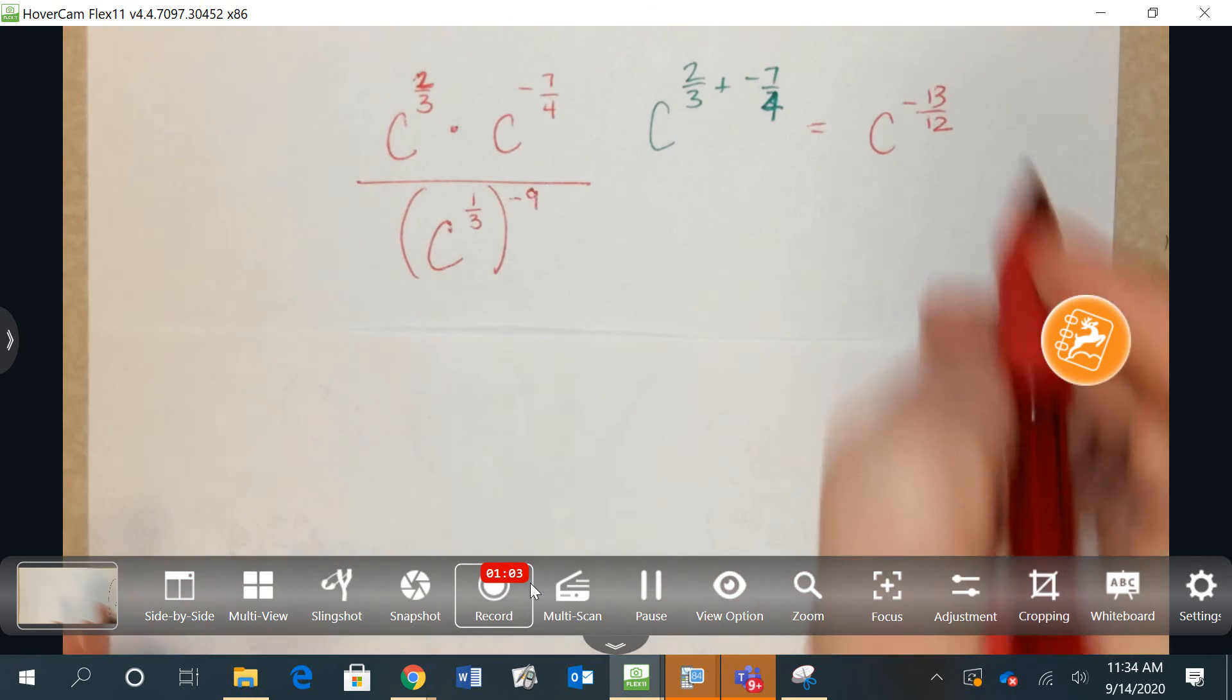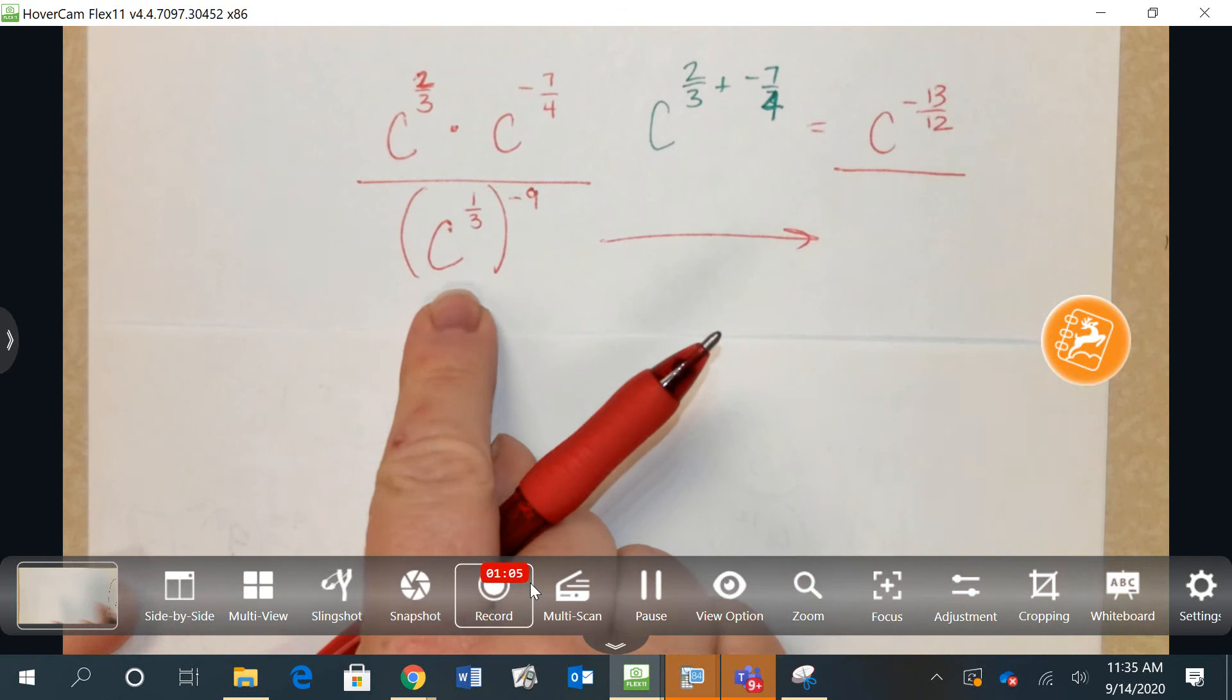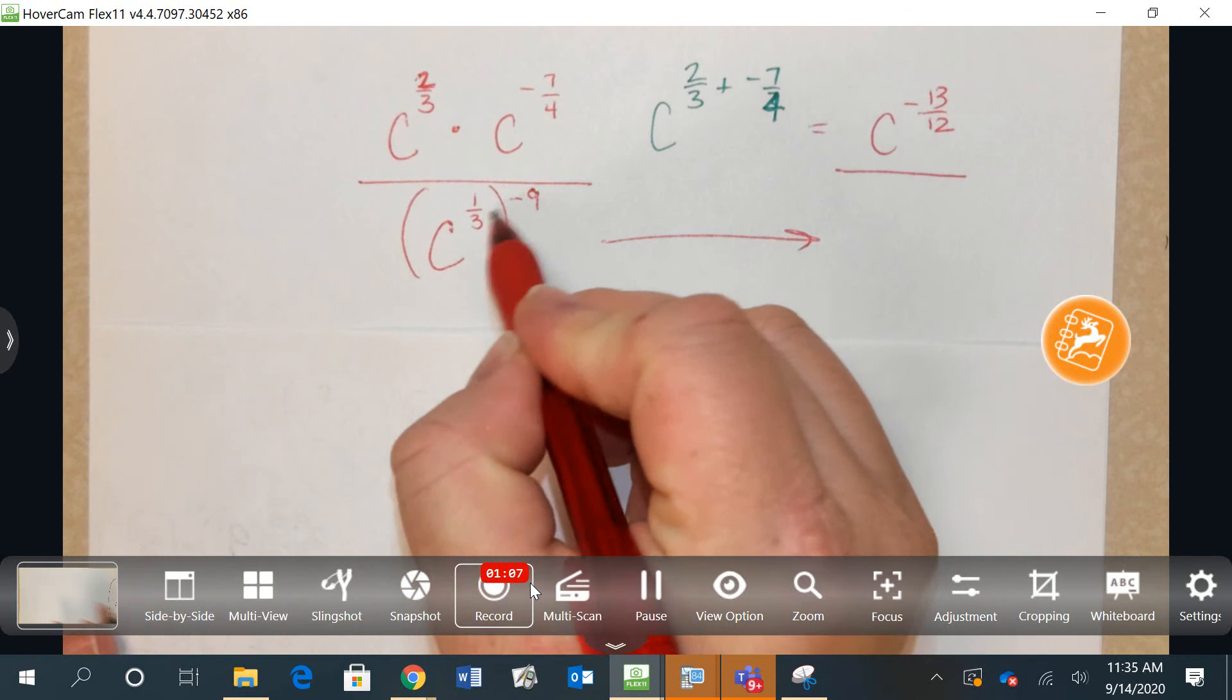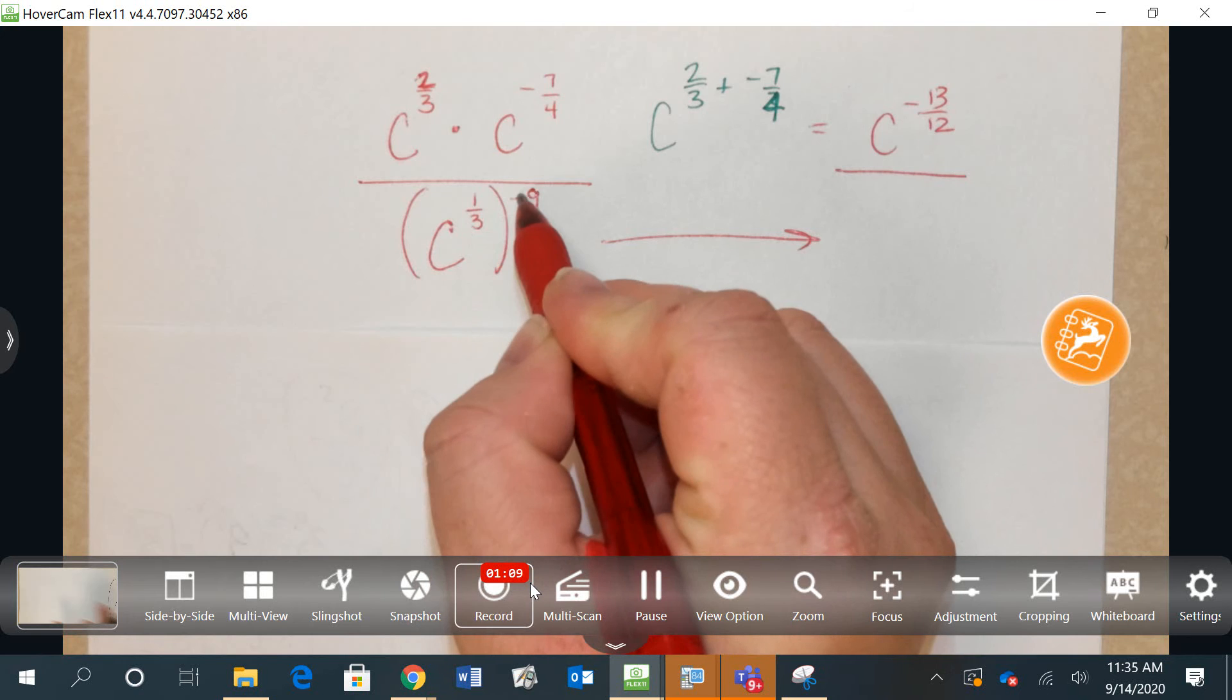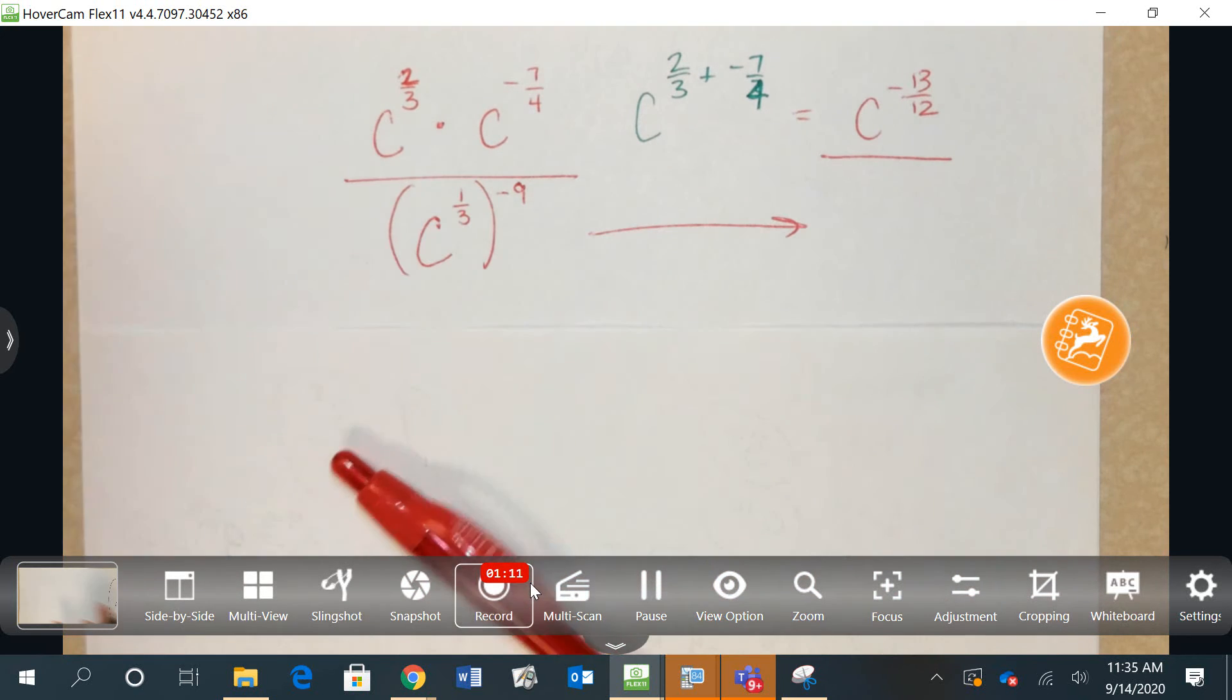Now let's look at the bottom. Some of you can do this in your head. Again, when you're dividing, you're going to multiply. So I want to take 1 third times negative 9. If you're not good with that, we can calculate that number.